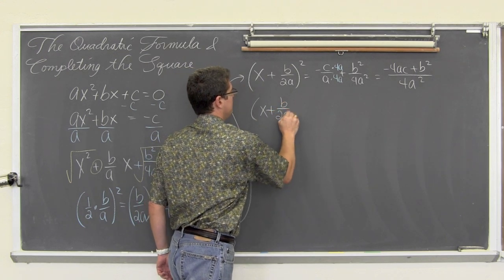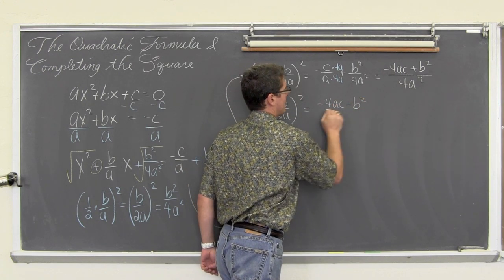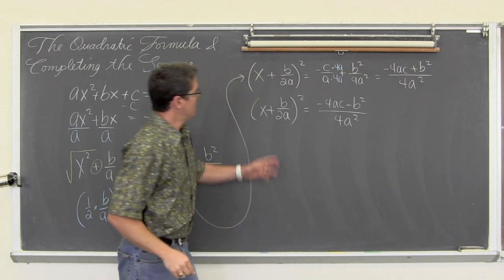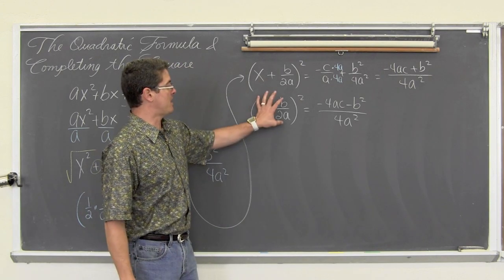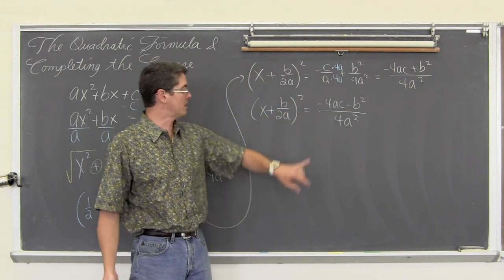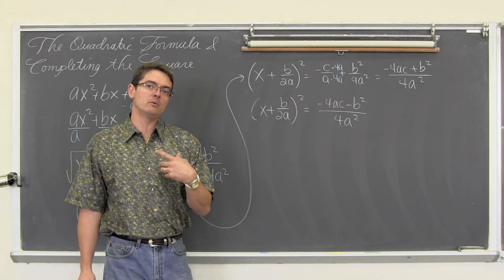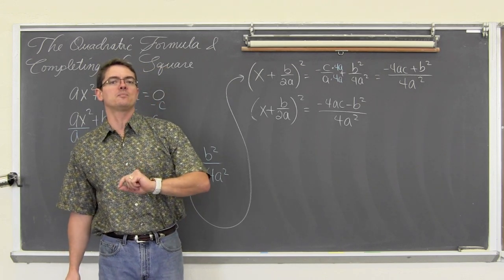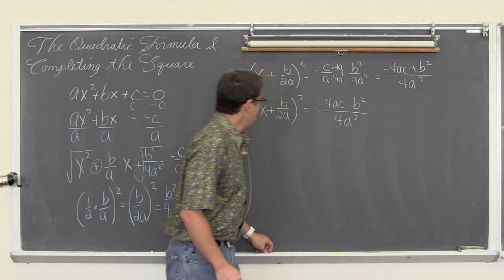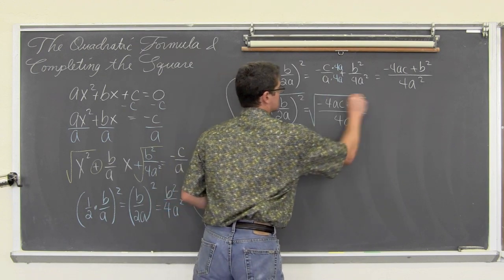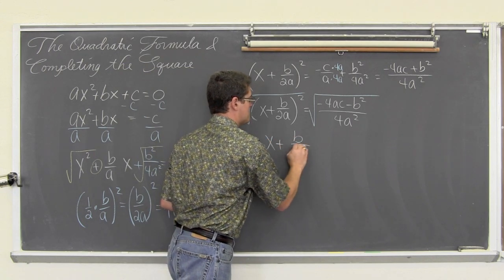So, cleaning that up, we have x plus b over 2a squared equals negative 4ac plus b squared over 4a squared. When you do the completing the square process, after factoring the perfect square trinomial, you will always have a binomial squared equal to something else. So we are going to undo that power of 2 by square rooting both sides of the equation, remembering to take into account positive and negative answers. The square root and that power of 2 cancel out, giving us x plus b over 2a.